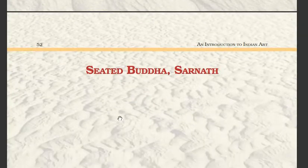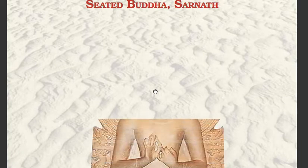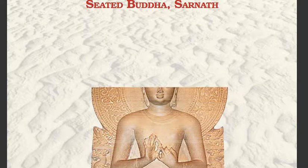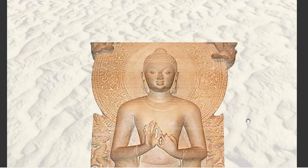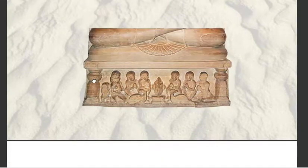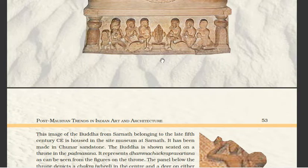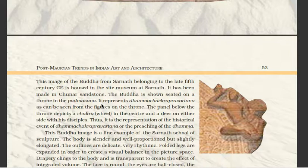Next we have the image of the seated Buddha at Sarnath. The image of the Buddha from Sarnath belongs to the late 5th century CE and is housed in the Site Museum at Sarnath. It has been made in Chunar sandstone. The Buddha is seated on the throne in the Padmasana and represents the Dhamma Chakra Parivartana, as can be seen from the figures on the throne.